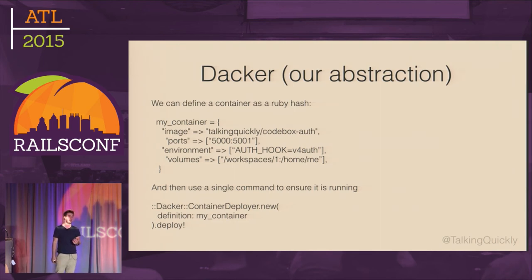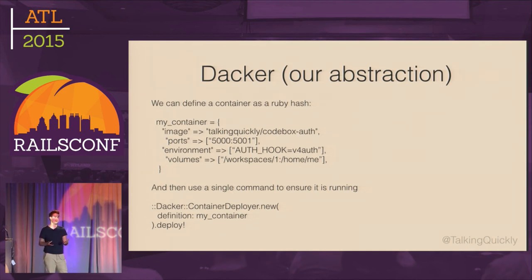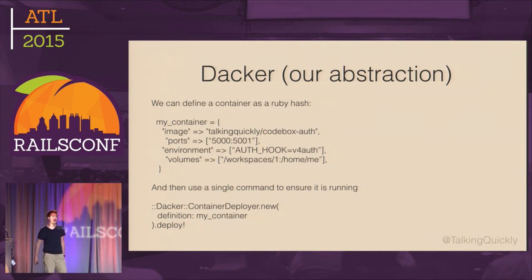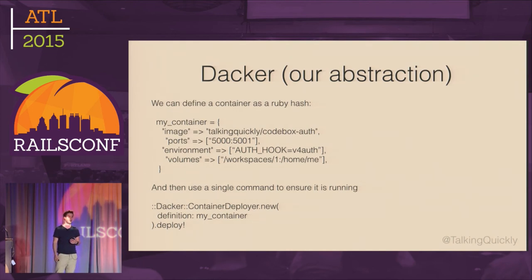You can think of this like first_or_create in ActiveRecord — we're not concerned about the underlying database driver or specifics of querying and creating a record. We just want to say a record has these properties, make sure it exists, and return it. Because we have the Docker API and gem, it was easy to build that abstraction. We called it DACA. Using a standard Ruby hash, we define properties a container should have — base image, ports to map, volumes to mount, and environment variables. We pass that hash to a DACA container deployer and say deploy it.